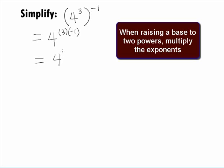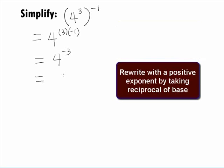Multiplying the 3 and negative 1 together in the exponent, we get 4 raised to the negative 3 power.